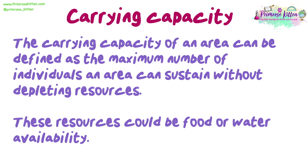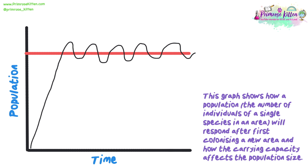The first thing we're going to look at is a graph for carrying capacity. The carrying capacity of an area can be defined as the maximum number of individuals an area can sustain without depleting resources — these resources could be food or water availability. This graph shows how a population will respond after first colonising a new area. At the beginning of the graph, the population starts to increase exponentially, as there are lots of available resources and therefore low intraspecific competition between members of the same species, so lots of breeding can occur. This continues until the carrying capacity is reached.